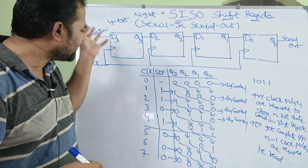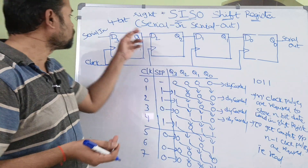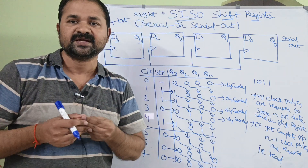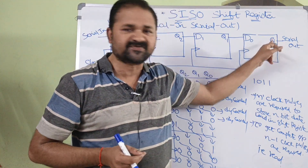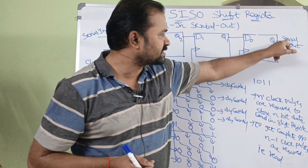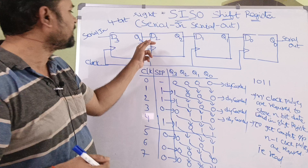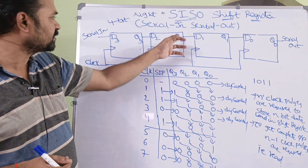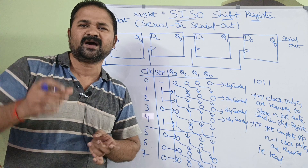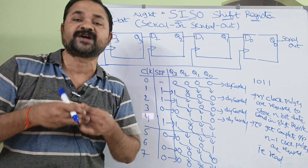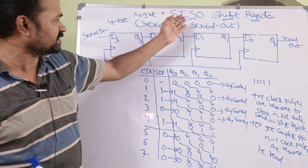So that's why here we are shifting the bits of the register one position towards the right. We can also perform shift-left operation. For shift-left operation, serial input will be applied to the last flip-flop and Q0 is the output, connected as input to D1. Q1 connects to D2, and Q2 connects to D3, so Q3 is the serial output. But the most commonly used approach is the shift-right register. This is the diagram for a 4-bit shift-right register using SISO.